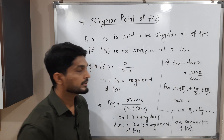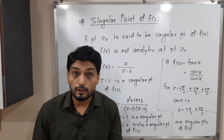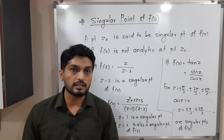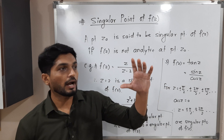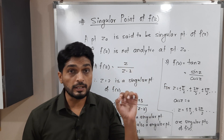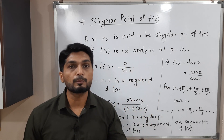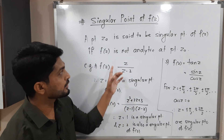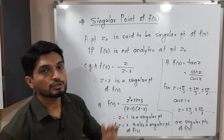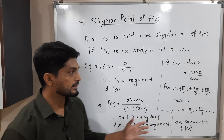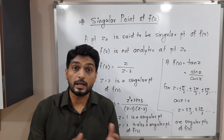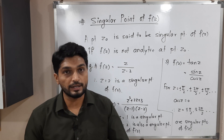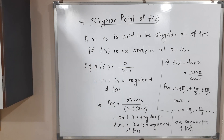In this way we have learned what a singular point is. In simple language, if you have any function and for a particular value of z the denominator is 0, then we say it is a singular point of f of z. The definition is: it is a point where the function is not analytic. In the next video we are going to discuss various types of singular points and how to find them. Thank you.